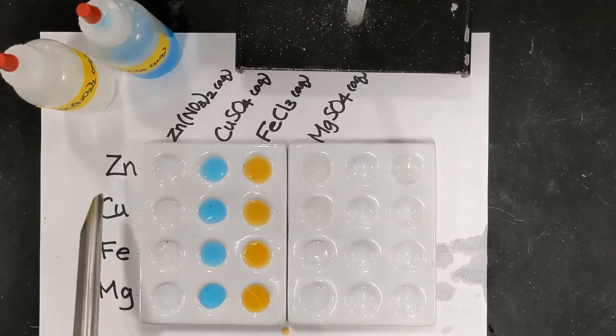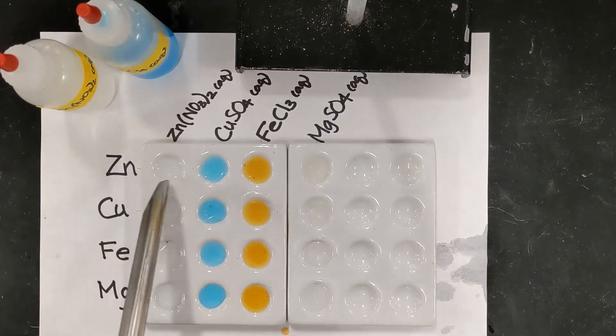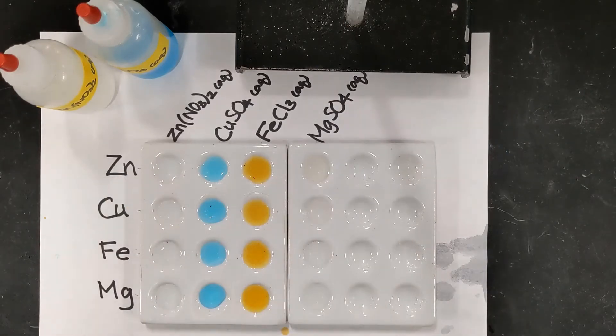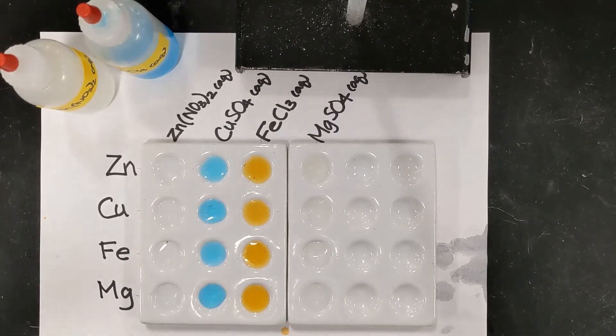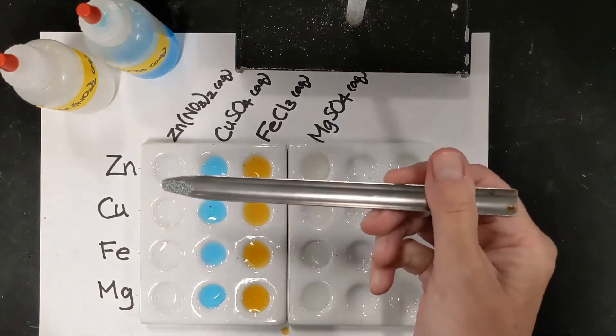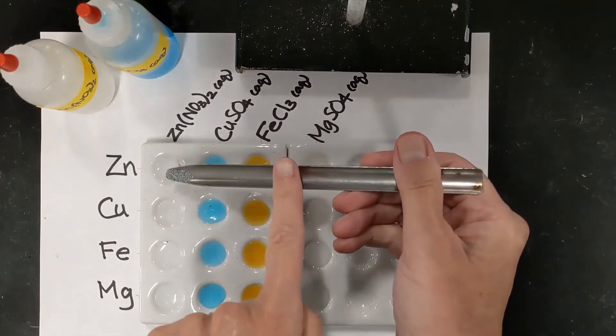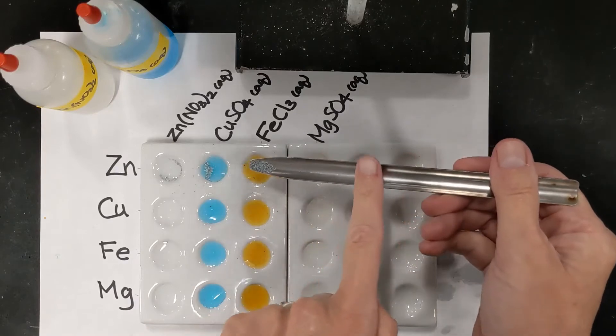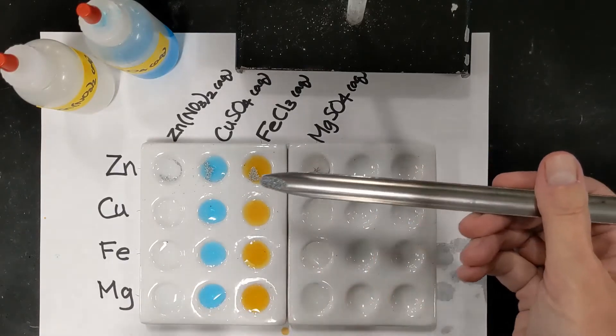And what I'm going to do is take a little bit of each metal listed on the side and drop it into each of those wells. So we will start with the zinc. The zinc is kind of a light silvery metal, some little granules there. A little bit of that one into each of the wells.